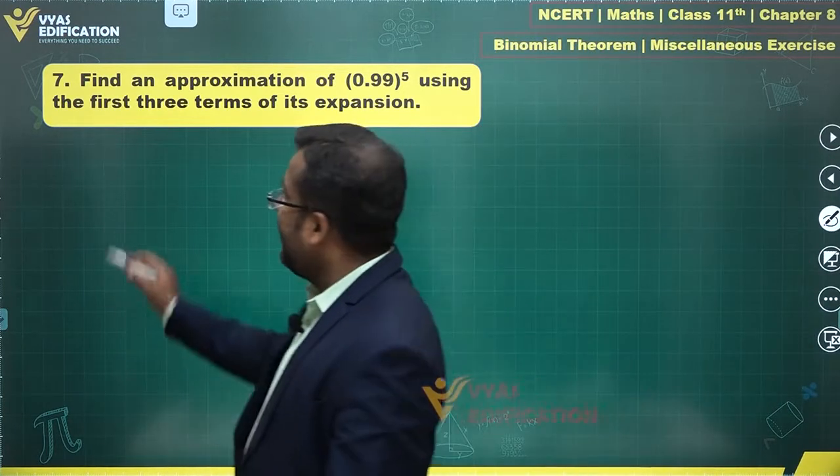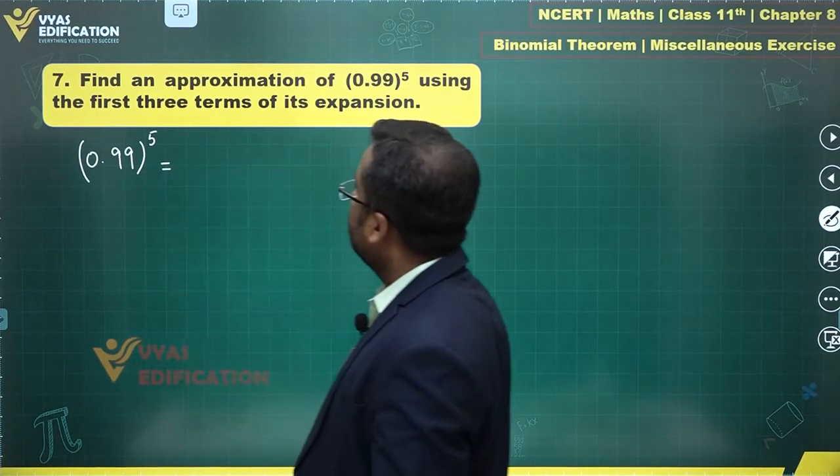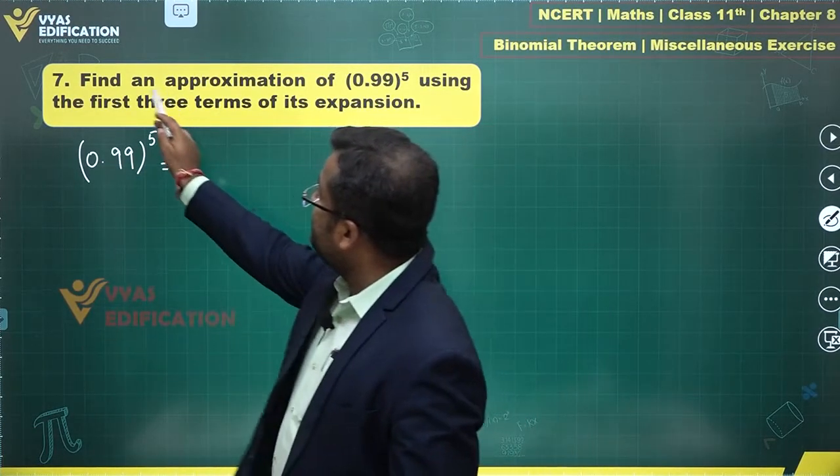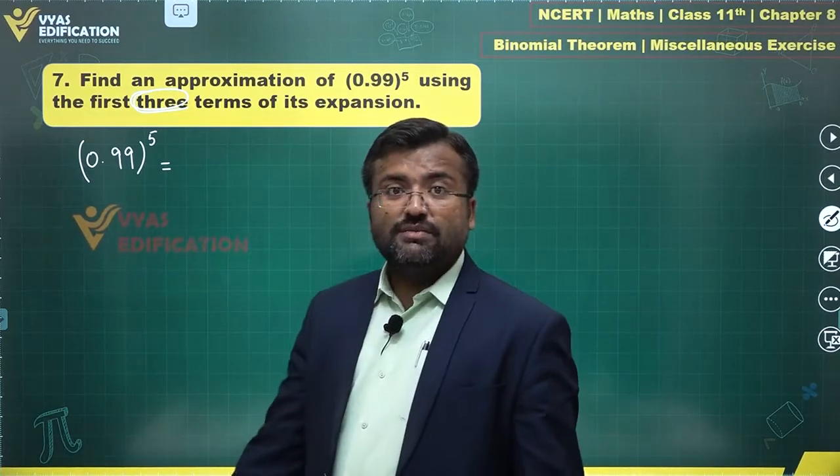So 0.99 raised to power 5 using the first three terms. That's what we are interested in. First three terms. So what kind of an expansion are we looking at?